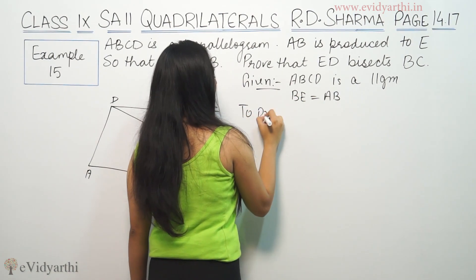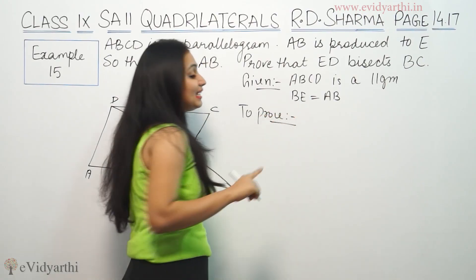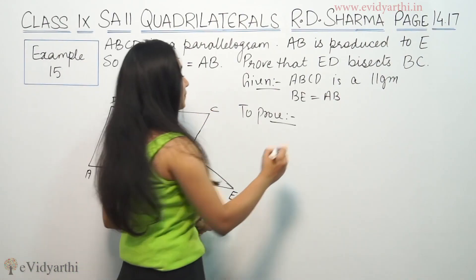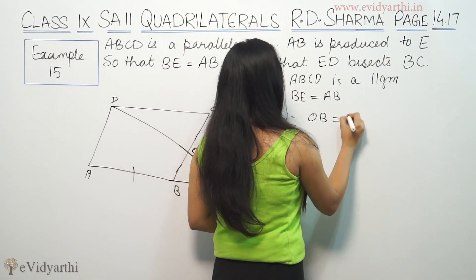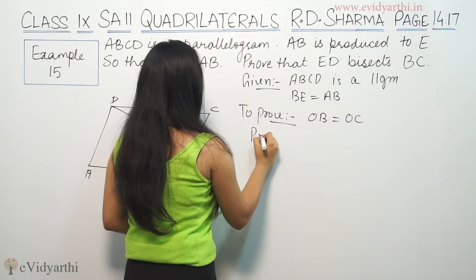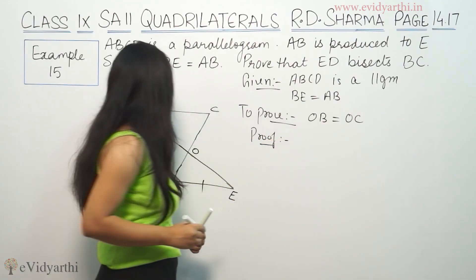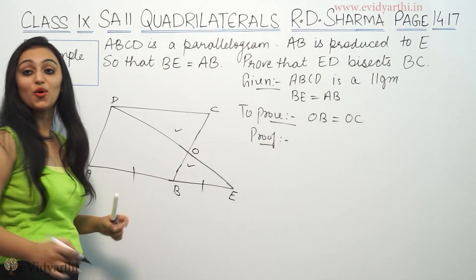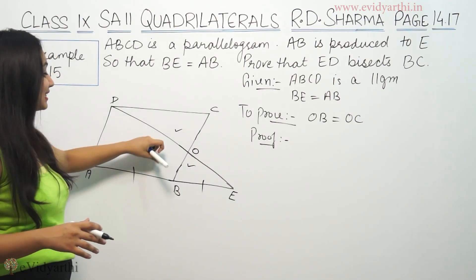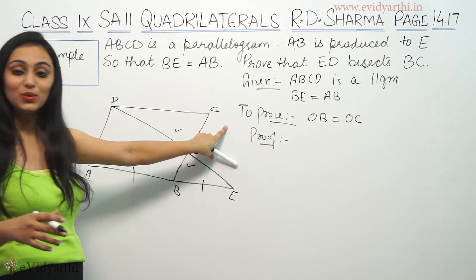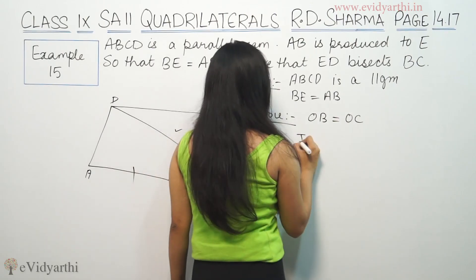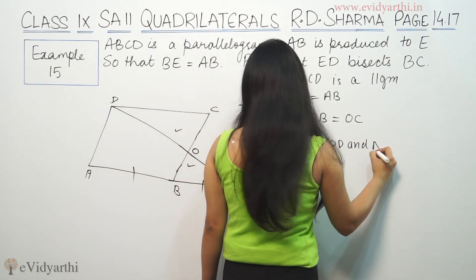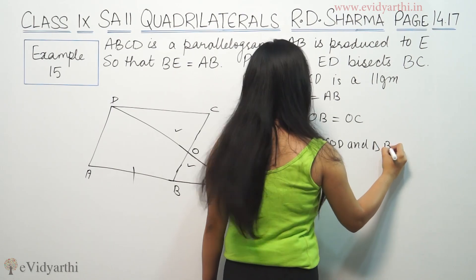To prove that ED bisects BC, that means we have to prove that OB is equal to OC. So if we have to prove these two triangles congruent — this triangle and this triangle — we have to prove that this side is equal to this side. So in triangle COD and triangle BOE.